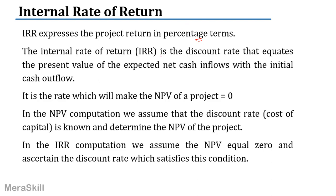What is the internal rate of return? It is supposed to be that discount rate that equates the present value of the expected net cash flows with the initial cash outflow. It is the rate which will make the NPV of a project equal to 0. If you use 15% as the rate of discount and when you use 15% the NPV becomes equal to 0, that would be the internal rate of return.